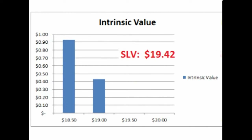If the price of SLV remains at $19.42 and the options are about to expire, the $18.50 and $19.00 strikes still lock in the right to buy SLV for less than the current price, so they retain some value — only the intrinsic value, which is the difference between the strike price and the current price of $19.42. Therefore, the $18.50 strike has $0.92 of value, and the $19.00 strike has $0.42 of value. However, the $19.50 and $20.00 strikes are above the current price, so these options have become worthless, as there is no time left for SLV to climb above $19.50 or $20.